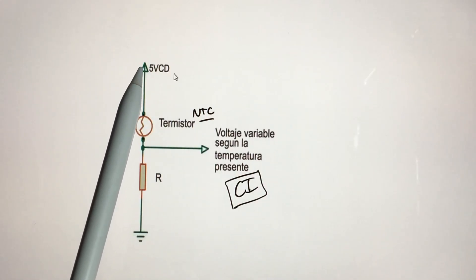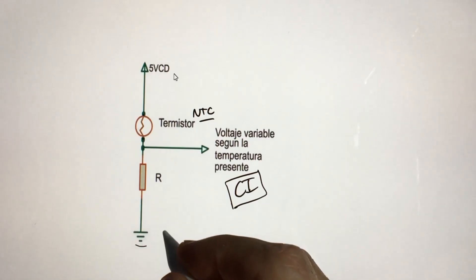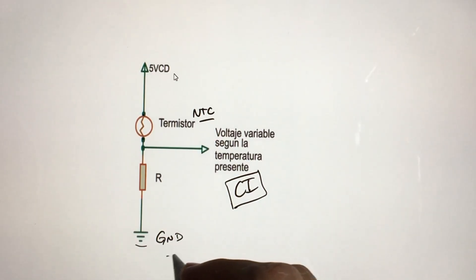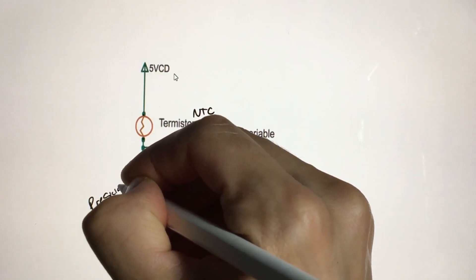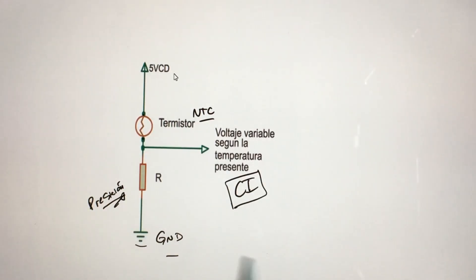5V positive are injected directly into the sensor and the negative is injected. This is the GND, the negative, through a precision resistor. It is not a common resistor. And through it, a voltage of equalization is reached and the resulting voltage goes to the integrated circuit.